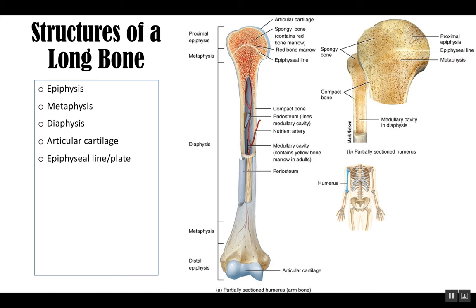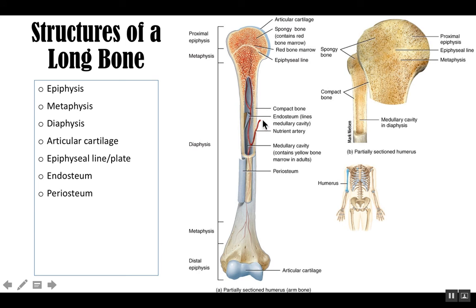We'll talk more about how bones grow later on. The endosteum is an inside lining to the bone — endo means inside, osteum means bone — so it's a layer on the inside of the bone that lines the medullary cavity. The periosteum — peri means surrounding — is the layer surrounding the outside of the bone. It looks as if both of these have been kind of peeled away. So endosteum and periosteum.